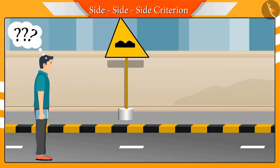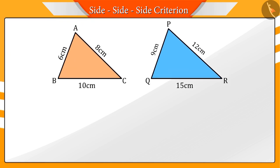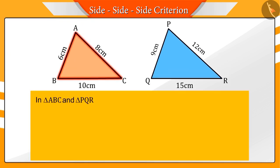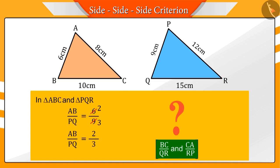He wonders if all these triangular signboards are similar or not. Let's see. In triangles ABC and PQR, the ratio of corresponding sides AB and PQ is found to be 2 by 3. Can you tell the ratio of BC by QR and CA by RP?